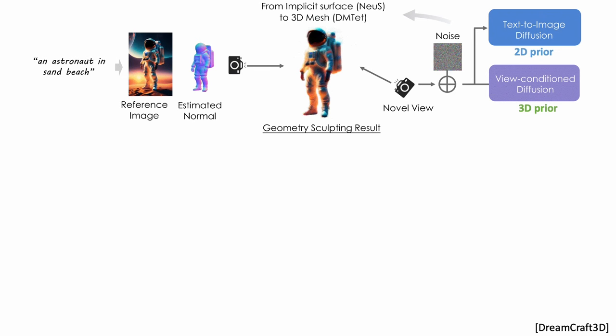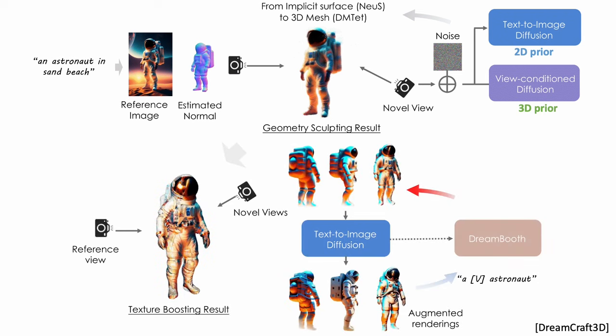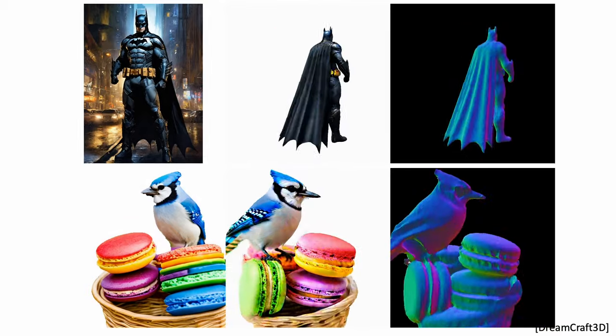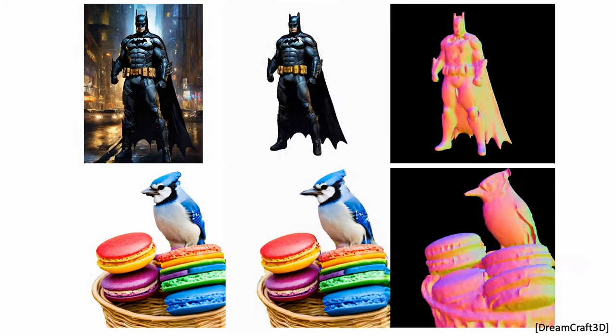Recent work further improved the appearance quality by combining the ideas of 2D and 3D priors with improved score distillation. Here, DreamCraft3D first gets coarse geometry results using both 2D and 3D priors, and then focuses on improving the appearance using a variant of variational score distillation sampling. This gives really impressive single image to 3D model results.